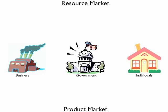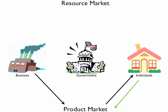The product market is a market where finished goods and services are bought and sold. Businesses make various goods and services and sell them in the product market. Individuals buy goods and services from the product market and spend money there. Businesses earn revenue from the product market.